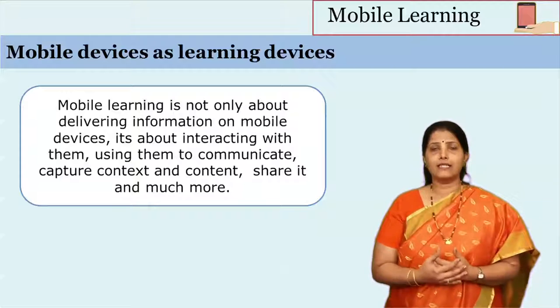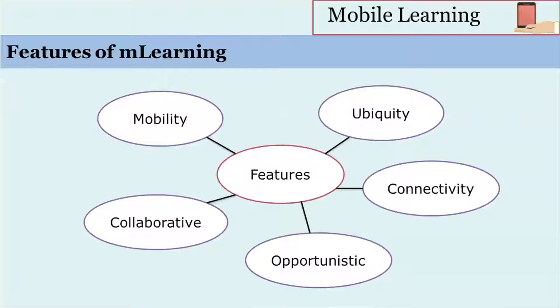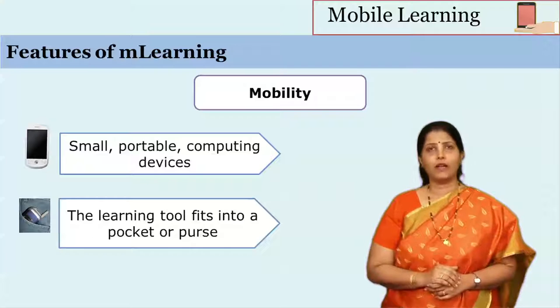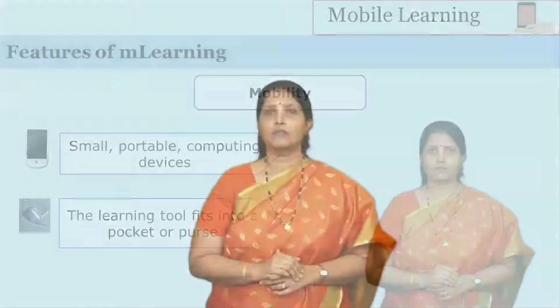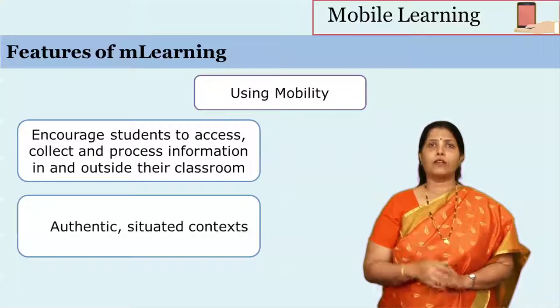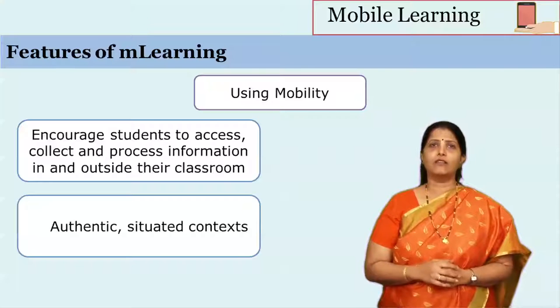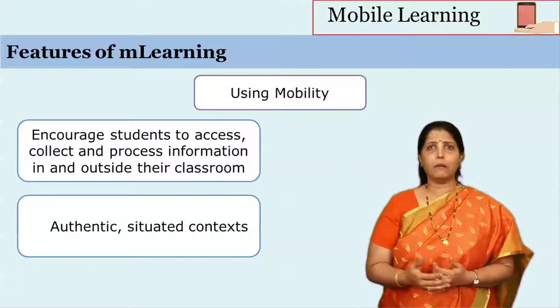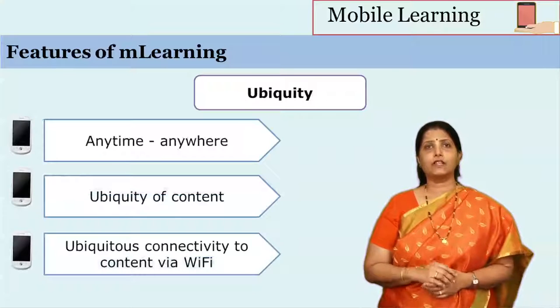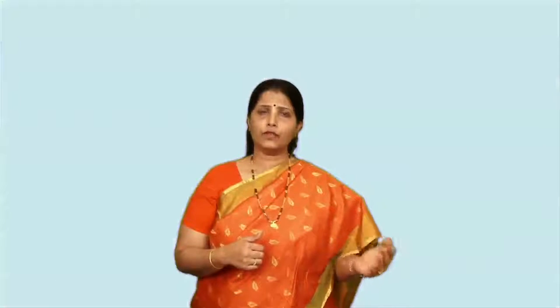Let's take a look at the features of mobile learning: mobility, ubiquity, connectivity, opportunistic, and collaborative. Mobility is the portability of the device — being small, it can be carried from one place to another and fits in the user's pocket. Because mobile devices are portable, the instructor can put content onto them, and the learner can use that content when on the move — traveling by bus, train, or public transport — reading text, listening to audio, or watching videos.